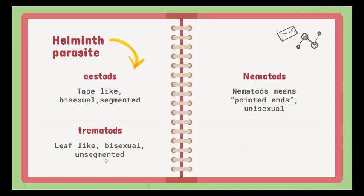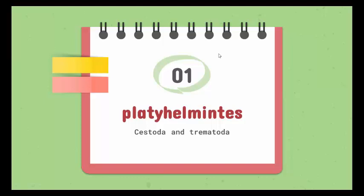One thing to note: except for one species of trematodes which is unisexual, all other species are bisexual. We will be discussing the name of that parasite in the proceedings. On the other hand, nematodes are pointed at both ends and they are unisexual — their male and female organs are found in different bodies. Platyhelminthes, which contain the cestodes and trematodes, are a general clue to distinguish between whether a parasite is a cestode or a nematode.